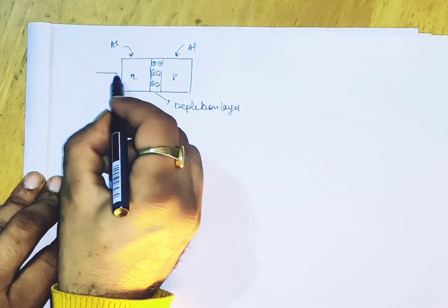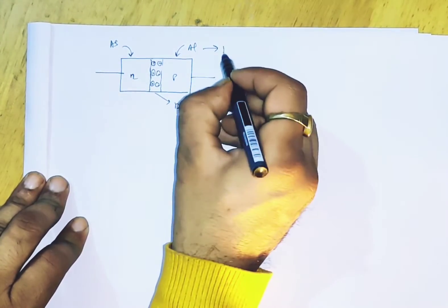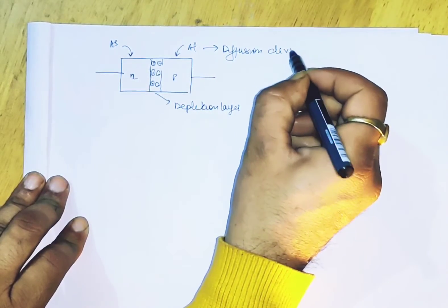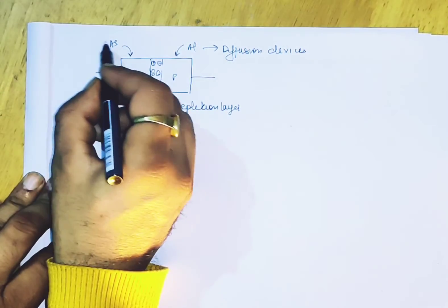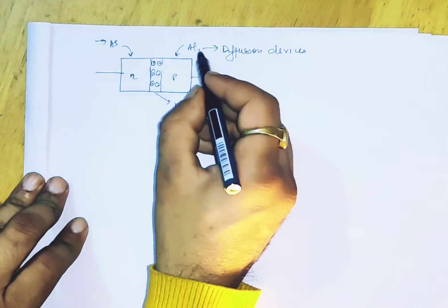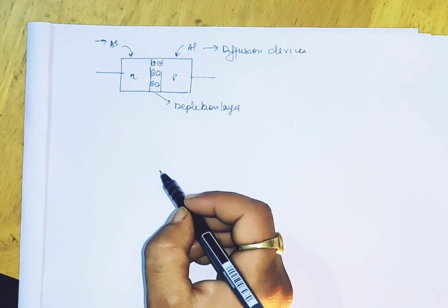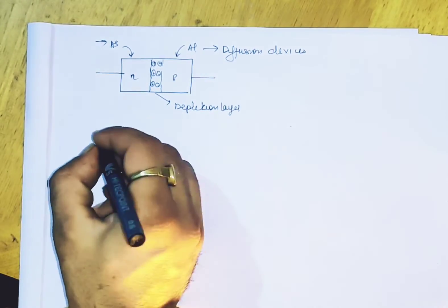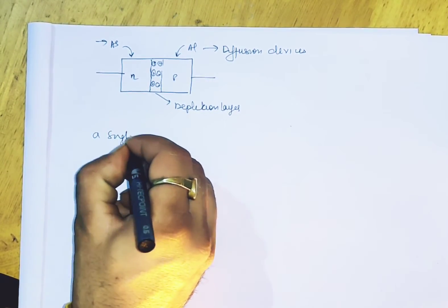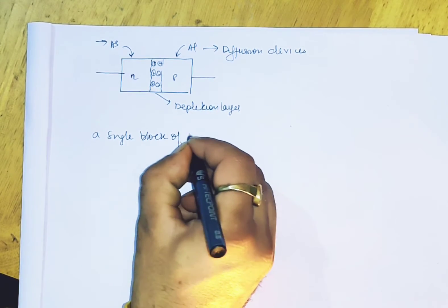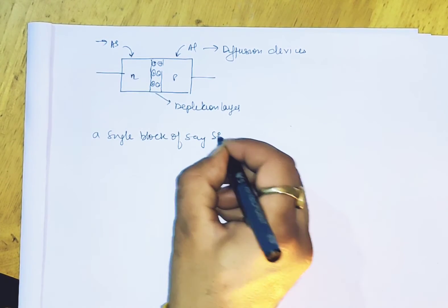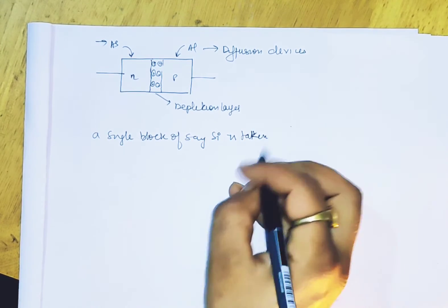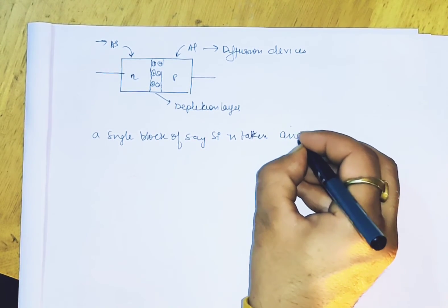We use diffusion devices with aluminum and arsenic. This is a single block of silicon doped from both sides.